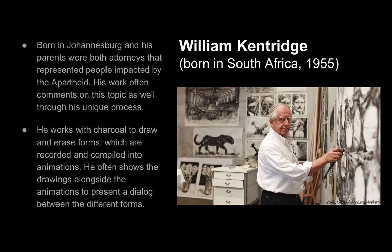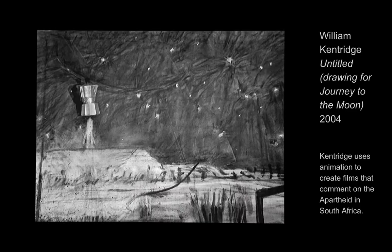So far we have looked at computer-generated images and animations. Let's now look at an example of stop motion that fits under the umbrella of computer art. Born in Johannesburg, William Kentridge is the son of attorneys who represented people impacted by apartheid, and his work often comments on this topic. He works with charcoal to draw and erase forms which are recorded and compiled into animations, and he often shows the drawings alongside the animations to present a dialogue between these two different forms. Here is a still from his work Untitled Drawing for Journey to the Moon from 2004.